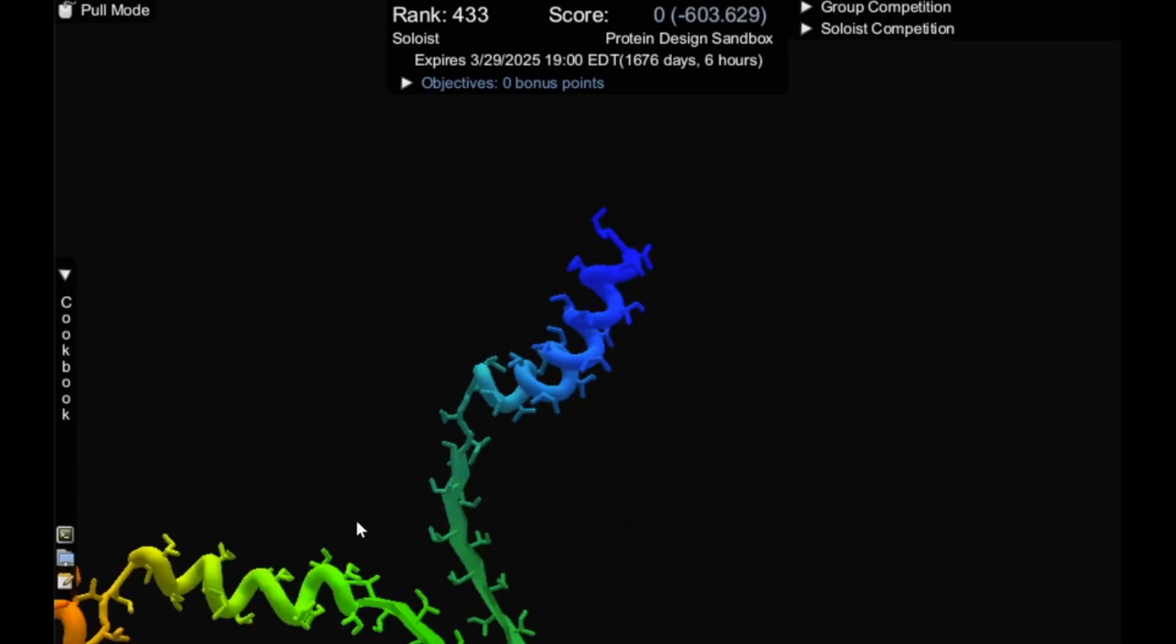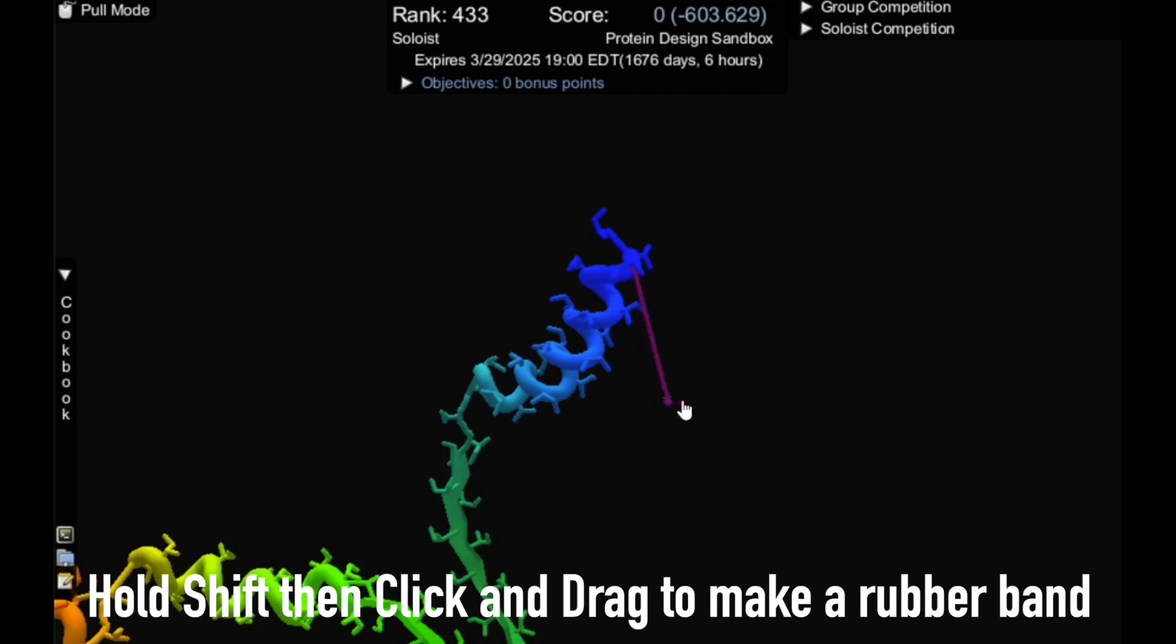To make a rubber band, hold shift and click and drag from the protein to where you want the band to. Notice that the band will snap to where I'm hovering over the protein, but I can also drag it out onto the background to make it a band in space or space band.